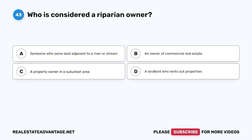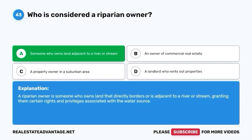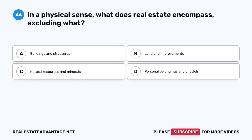Question 43. Who is considered a riparian owner? A. Someone who owns land adjacent to a river or stream. B. An owner of commercial real estate. C. A property owner in a suburban area. D. A landlord who rents out properties. The correct answer is A. Someone who owns land adjacent to a river or stream. A riparian owner is someone who owns land that directly borders or is adjacent to a river or stream, granting them certain rights and privileges associated with the water source.